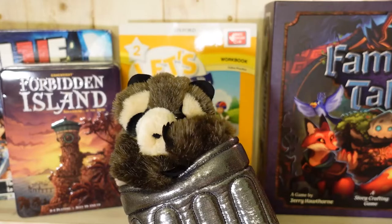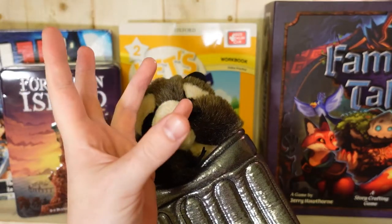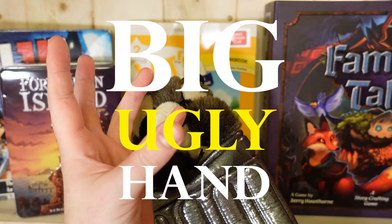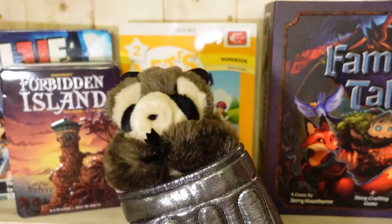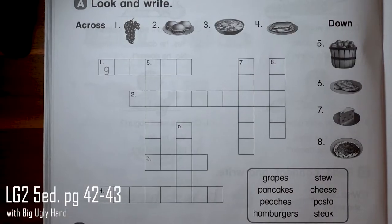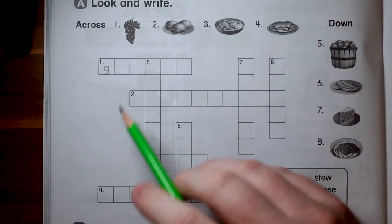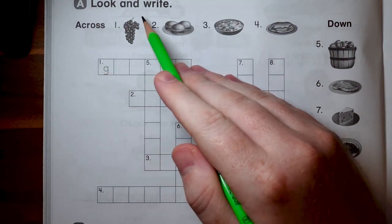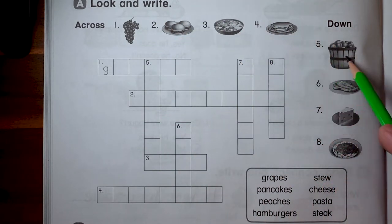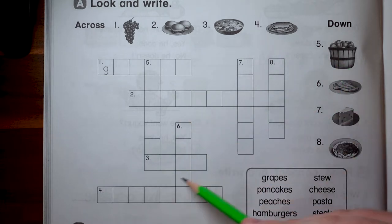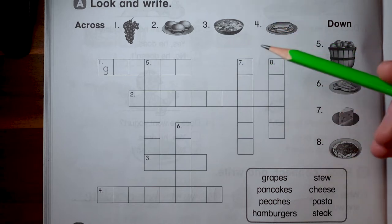All right, workbook time! Big Ugly Hand is here! Well, thank you Big Ugly Hand. This is pages 42 and 43 and the first part here says look and write and we're going to be taking these picture clues and then putting them into the crossword. And they put the spelling right here in this word box for us so it'll be nice and easy.